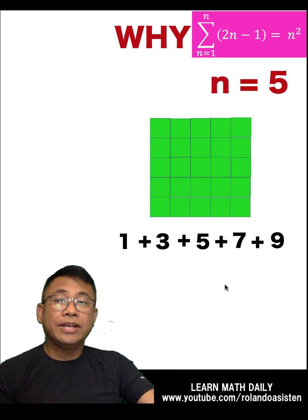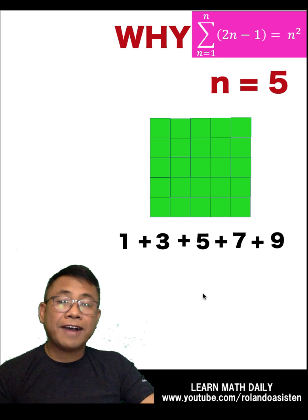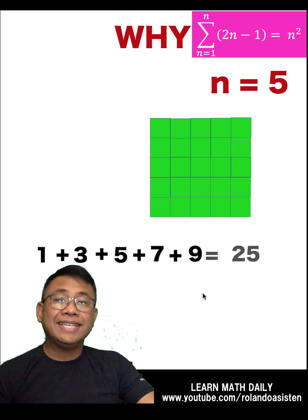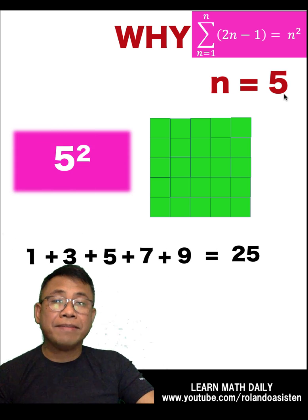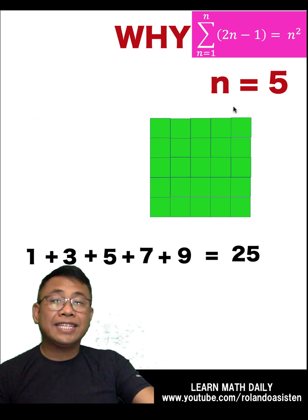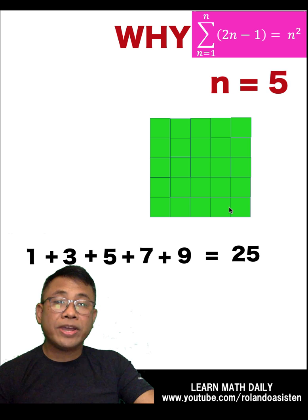So, if you know that n equals 5, we'll be able to find the sum of these 5 odd numbers by just simply squaring 5. Because 1 plus 3 plus 5 plus 7 plus 9 equals 25. And that's very clear in our number of squares here.